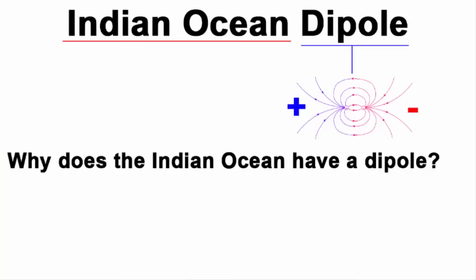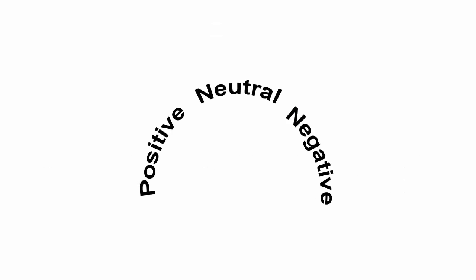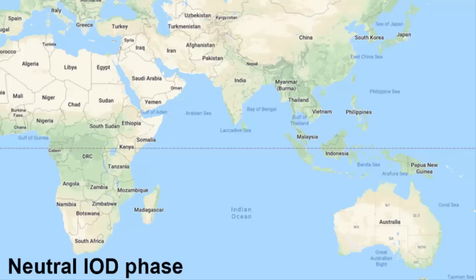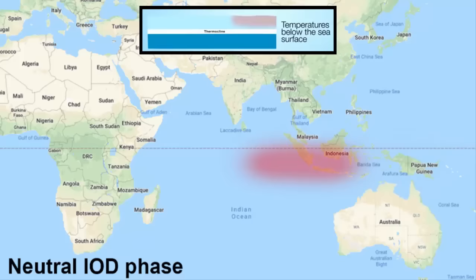Now let's look at how the Indian Ocean Dipole works. The IOD varies between three phases: neutral, negative, and positive. First, the neutral IOD phase. The neutral phase begins during spring season when temperature gradually rises. During this phase, water from the Pacific flows between the islands of Indonesia and Australia and comes in contact with the Indian Ocean. Temperatures are close to normal across the Indian Ocean.